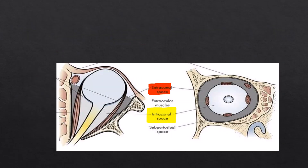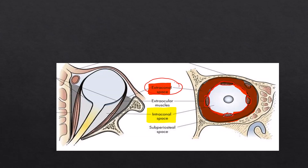The recti are not hanging in isolation in the orbit. In cross-section we can see the superior, lateral, medial, and inferior recti interconnected by thin connective tissue called the intermuscular septum. This septum, together with the muscles, divides the orbit into two parts: the extraconal space, present outside the muscles and the intermuscular septum, and the intraconal space, present between the muscles and the intermuscular septum.